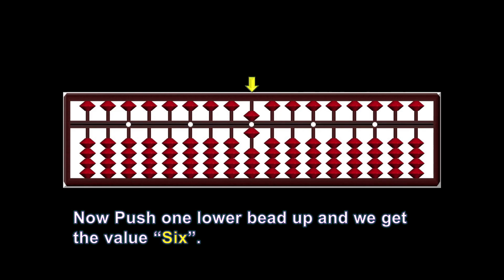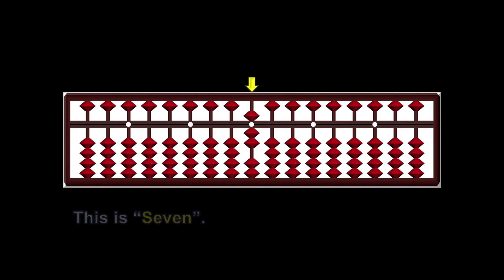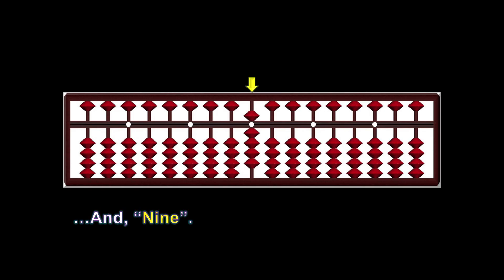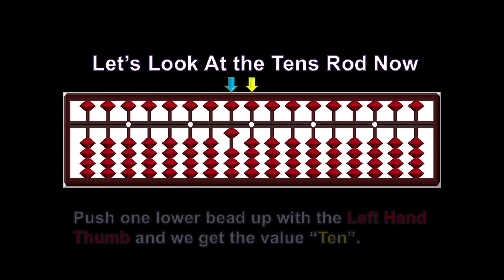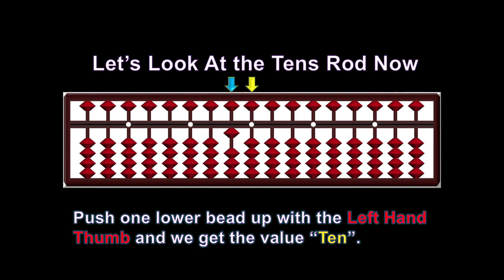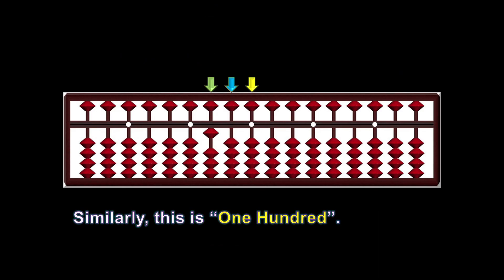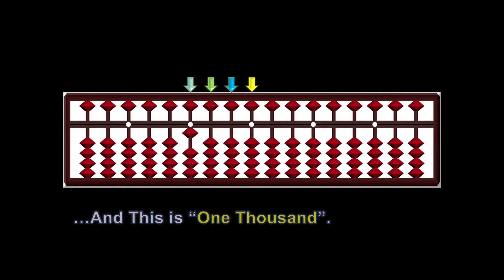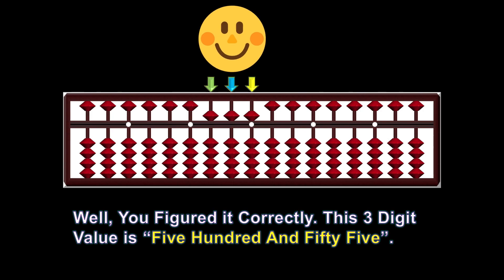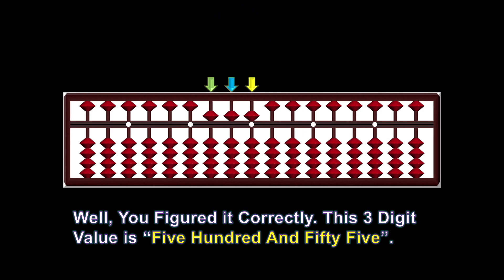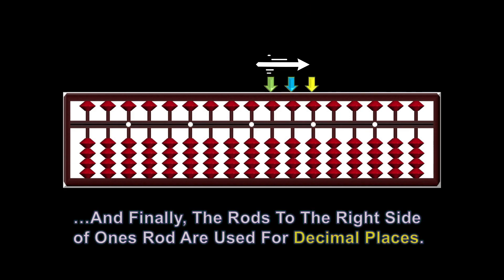Push one lower bead up and we get the value 6. This is 7, 8, and 9. On the tens rod, push one lower bead up with the left hand thumb and we get the value 10. Similarly, this is 100, and this is 1000. This three-digit value is 555. The rods to the right side of the ones rod are used for decimal places.